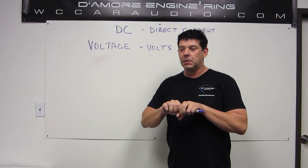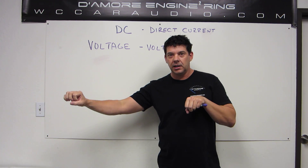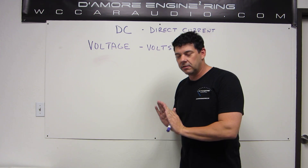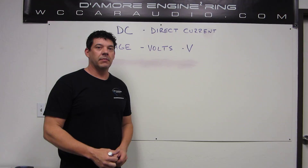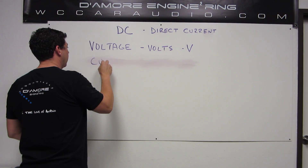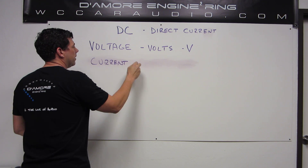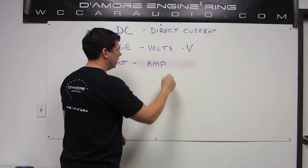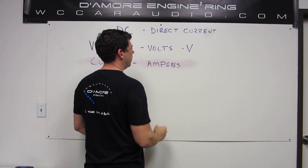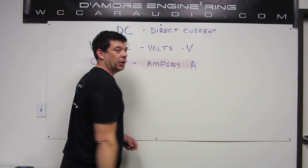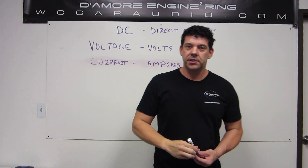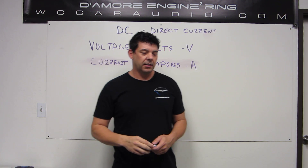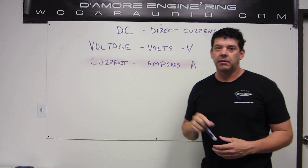Voltage is the push or force on all these electrons. Think of it like a tube of marbles — all these marbles are in there and the voltage is pushing on the marbles. They're not moving; it's just how hard are we pushing the marbles. So that brings us to current. Current is amps or amperes — we usually just say amps. The symbol is a capital A, although in Ohm's Law you'll see it as a capital I sometimes.